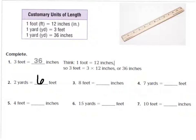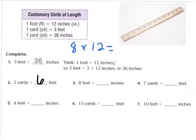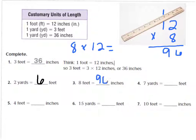Let's look at number 3. It says 8 feet equals how many inches? We're going from feet to inches. I know that 1 foot equals 12 inches. So if I have 8 feet times 12 inches, I can solve that by doing 12 times 8. 2 times 8 is 16 — carry the 1. 8 times 1 is 8, plus 1 is 9. So I have 96. So 8 feet is equal to 96 inches.